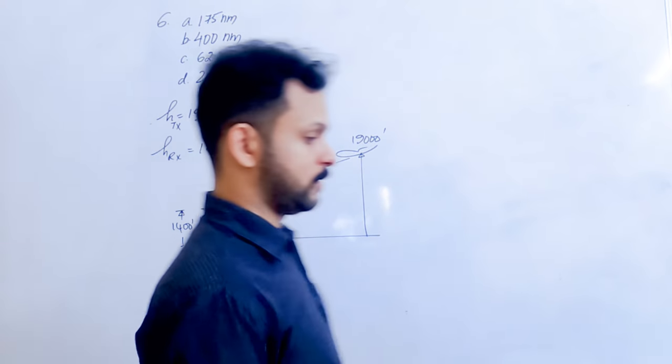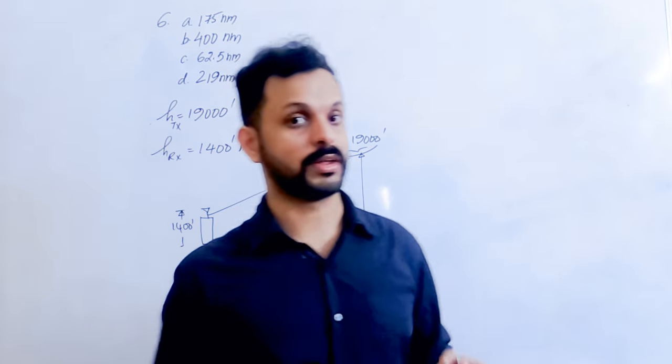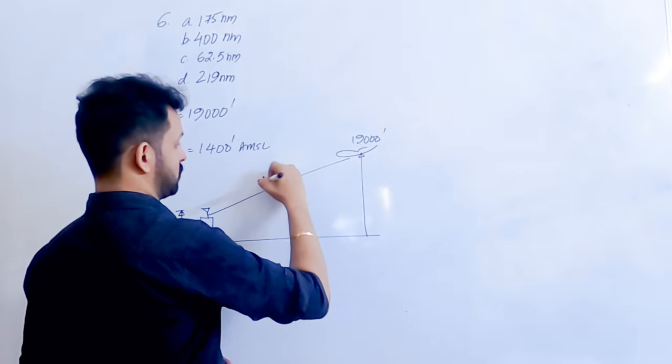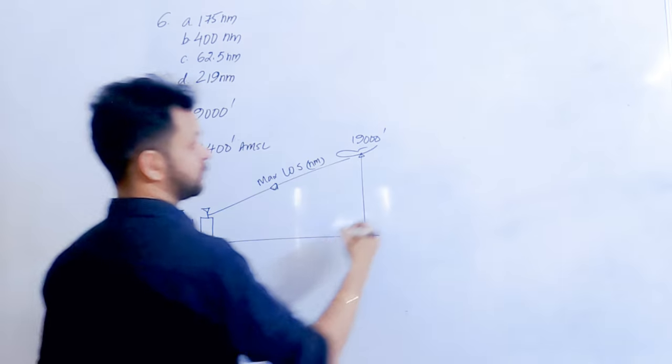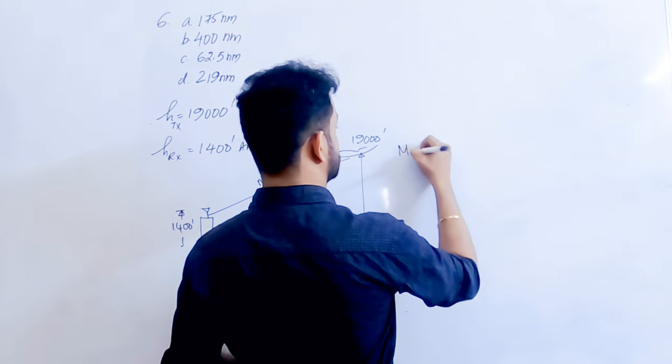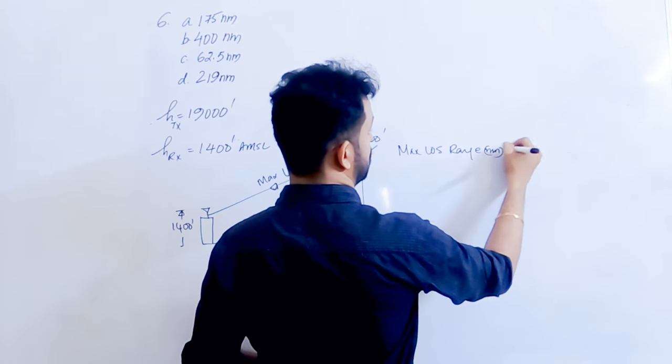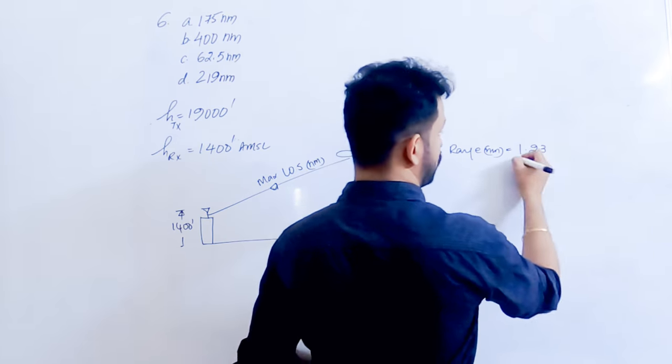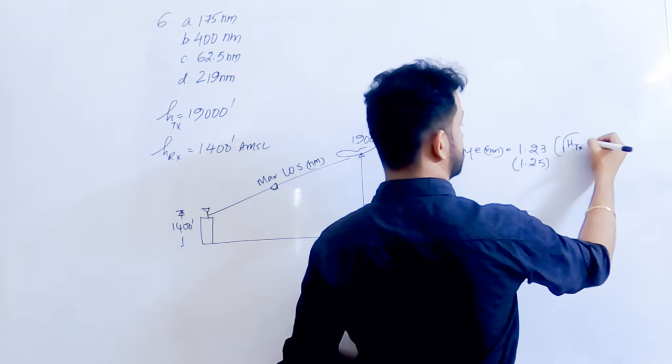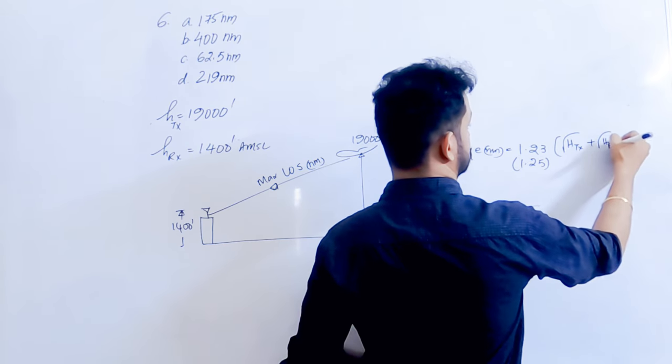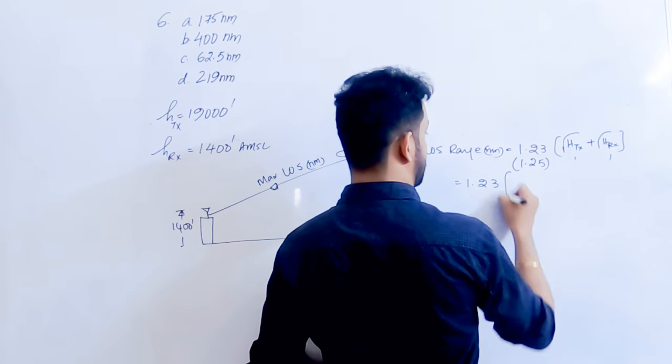In all these questions, it's asking the maximum range because that equation can yield only the maximum range. The maximum line-of-sight range in nautical miles is equal to 1.23 times the square root of height of transmitter plus height of receiver, both in feet.